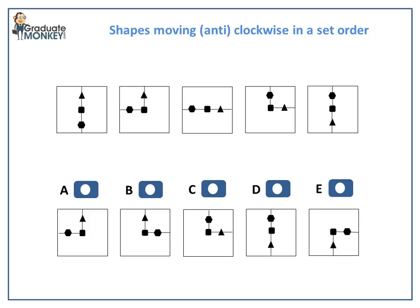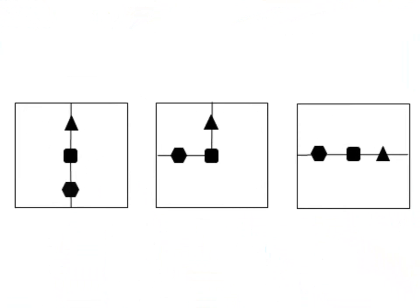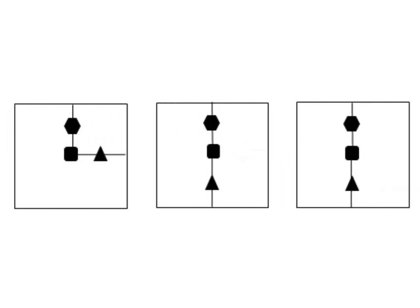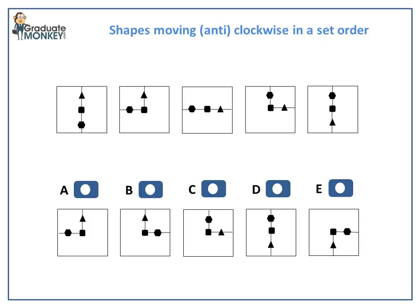Here is a pattern with a similar sequence to the first example. Take a look at how the sequence develops. Both the hexagon and the triangle arrows move clockwise.